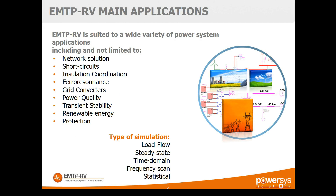Here are the main types of application of EMTP. Starting with the network solution — solving a load flow. EMTP is a time domain software, but it also has very powerful load flow capabilities: single-phase, multi-phase, balanced, or unbalanced. Initially, we used load flow to initialize the network. When you have synchronous generators or loads, you cannot start a time domain simulation without initializing them — you need to know the angle of each machine so the power flow makes sense.